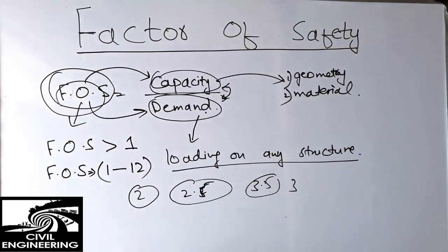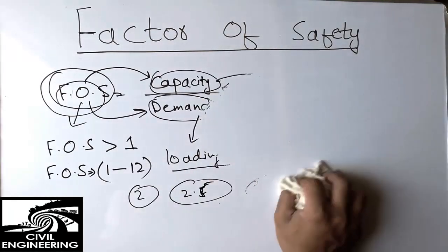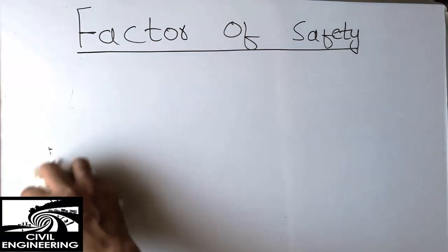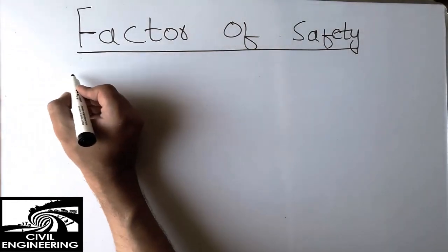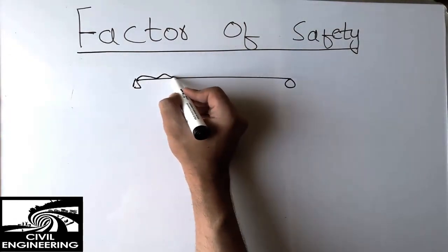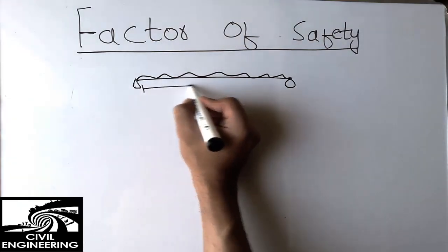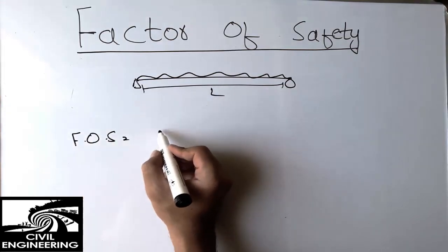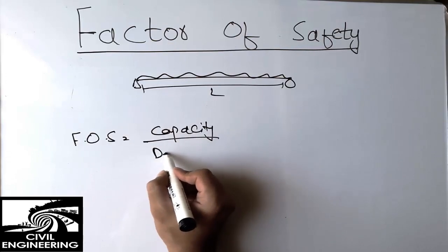Now let's come to capacity and demand with an example. I'll explain this using the example of a beam in a civil engineering structure. This is the beam, with a length L, and some load is coming on it. The factor of safety for the beam is defined as capacity divided by demand.